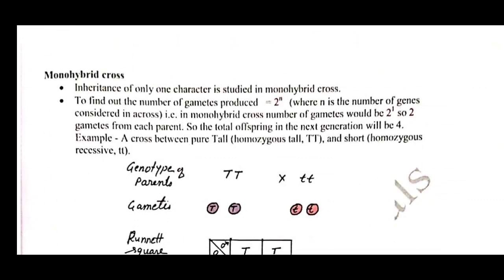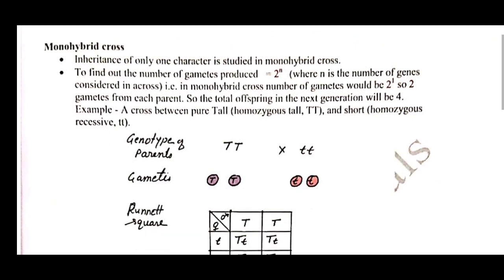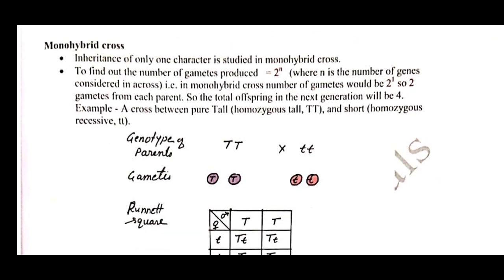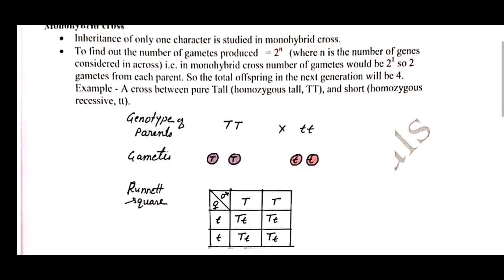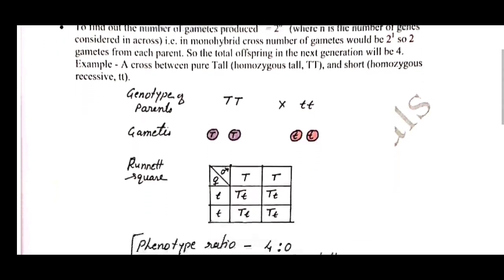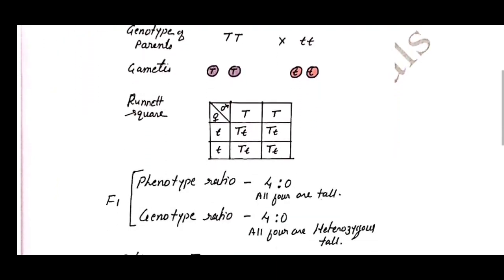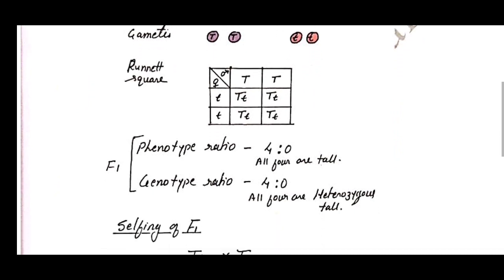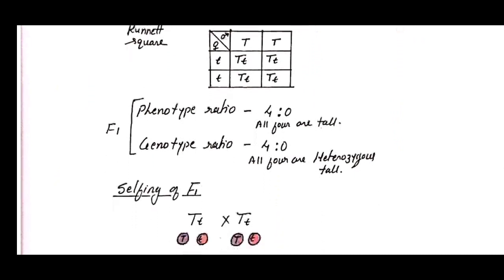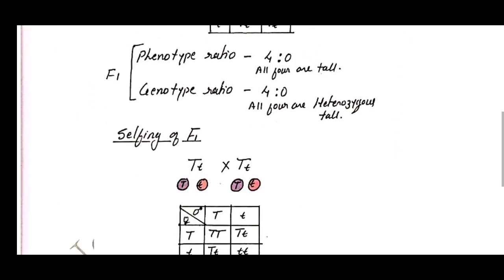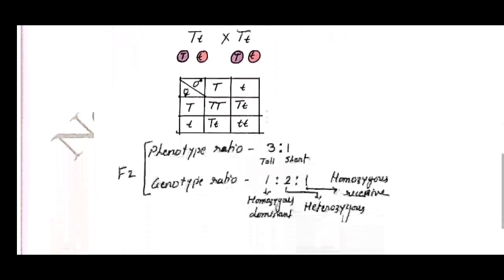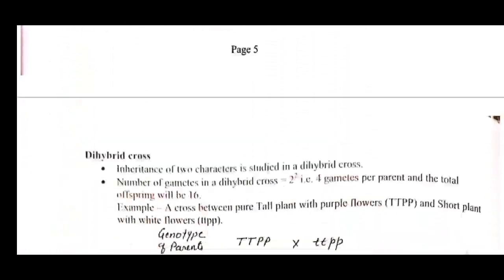Moving to page number five, we have the Monohybrid Cross, which is a very important topic for board examinations — asked many times. The crossing table and Punnett square are given here, and most importantly the phenotypic ratio and genotypic ratio are discussed on page number five.